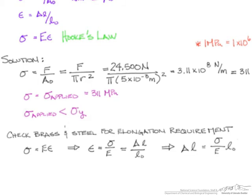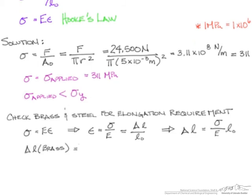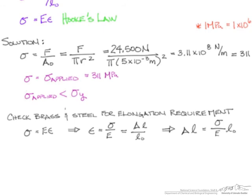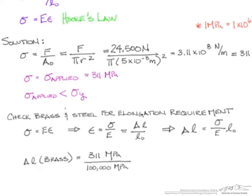So, we can now evaluate both brass and steel. So, we can go ahead and solve for delta L for brass, where we'll have 311 megapascals over 100,000 megapascals times 380 millimeters. One thing to note is, if we go back up and take a look at our table,